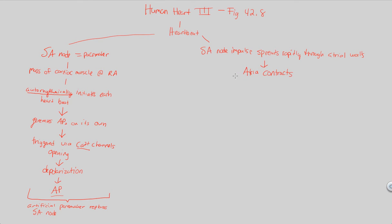The atria contract. The heartbeat is done in order — it is a cumulative effort between the atria and the ventricles to both contract at the correct time. Right now, it is only the atria's job to contract because they've received the message from the SA node impulse. During that atrial contraction, the impulse moves from the SA node to what is now the AV node.